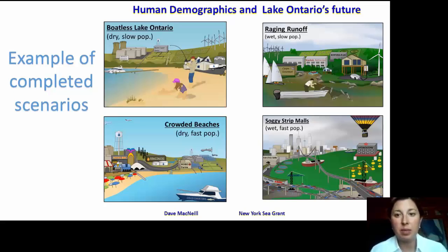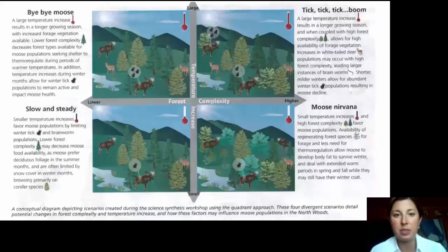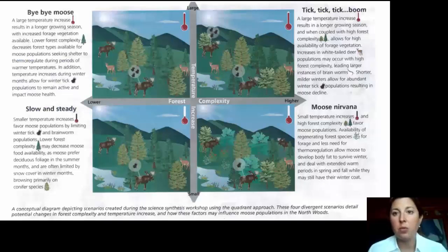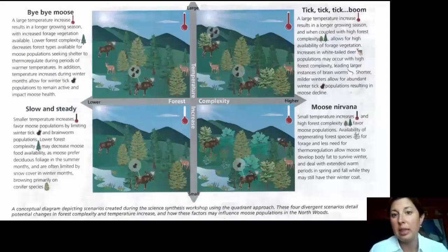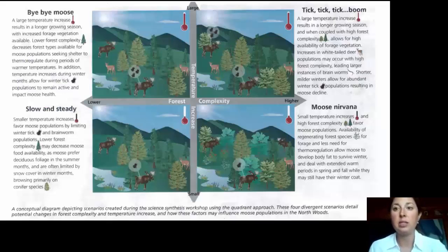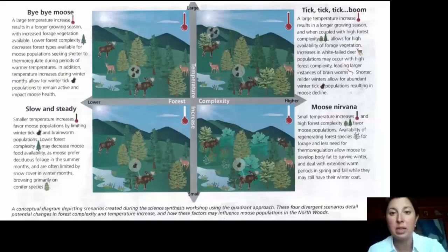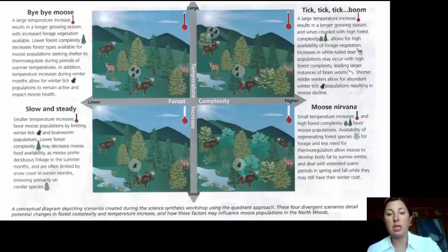Another example I really like comes from a national park that looked at temperature increase paired with forest complexity — more or less vegetation. Taking the top right quadrant, pairing temperature increase with higher forest complexity: a large temperature increase results in a longer growing season; with higher forest complexity, more vegetation is available to eat, leading to an increase in the deer population. Shorter winters allow for more pests — in this case tick populations — resulting in moose population decline. Each of the other quadrants does exactly the same, pairing drivers at divergent ends and examining the impacts.